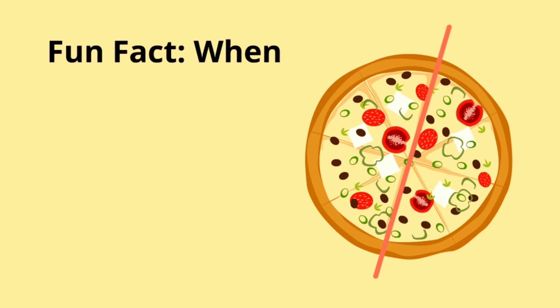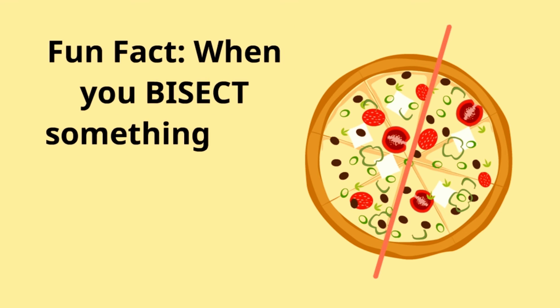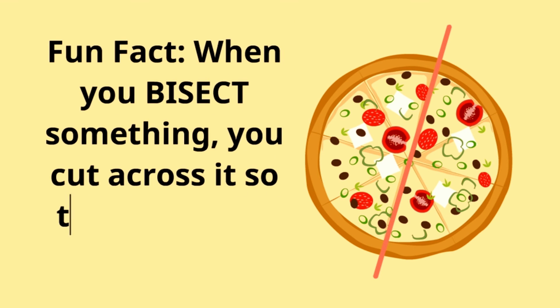Fun fact: when you bisect something, you cut it across so that there are two sections.